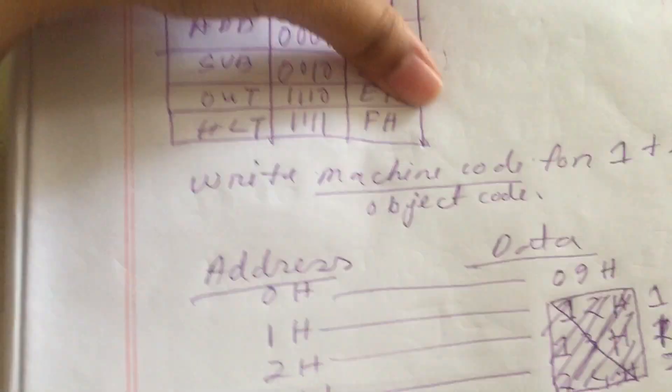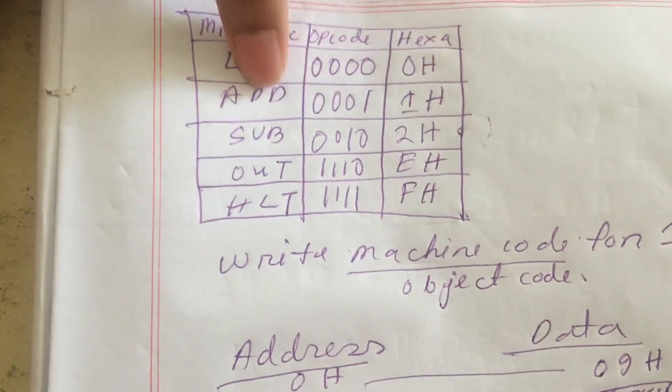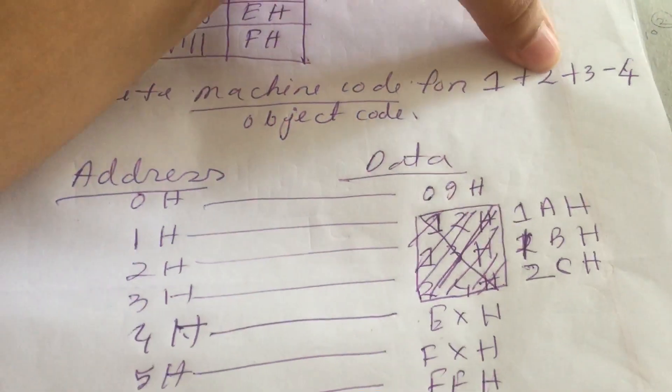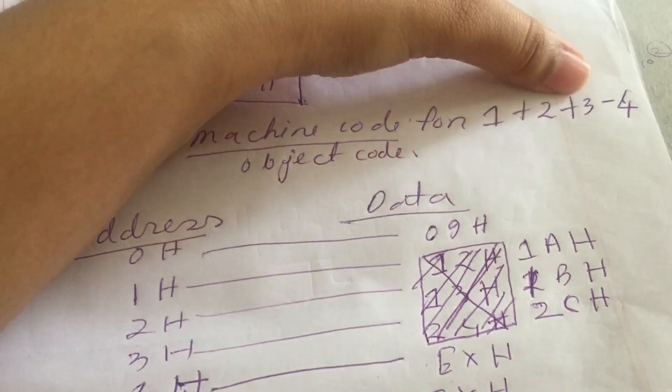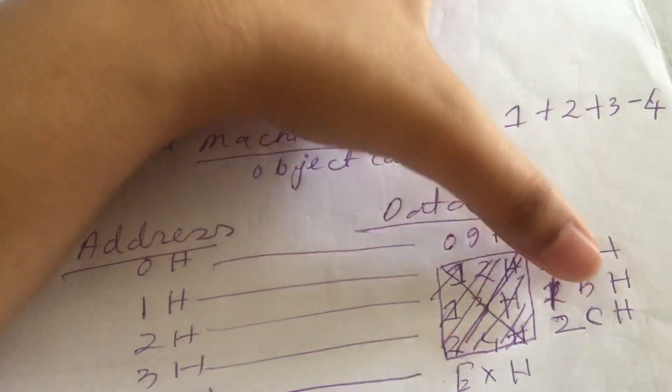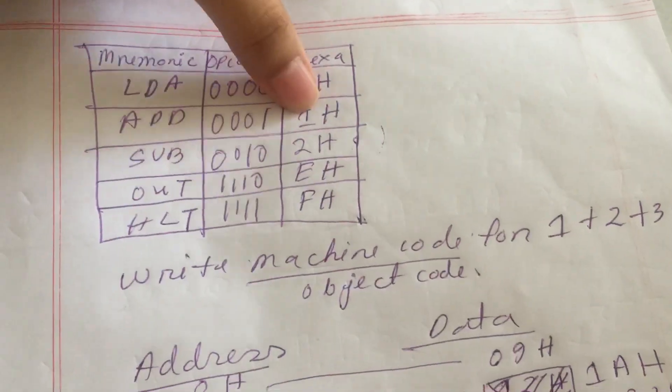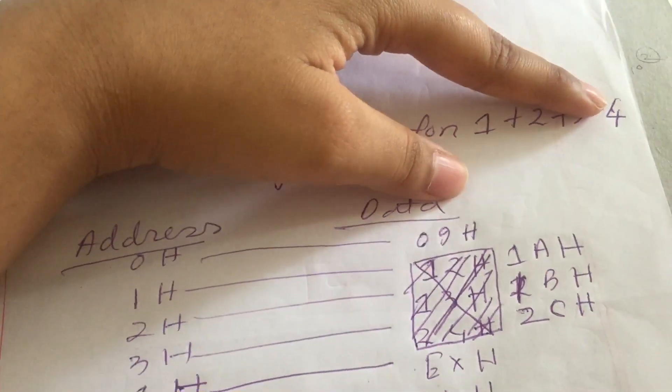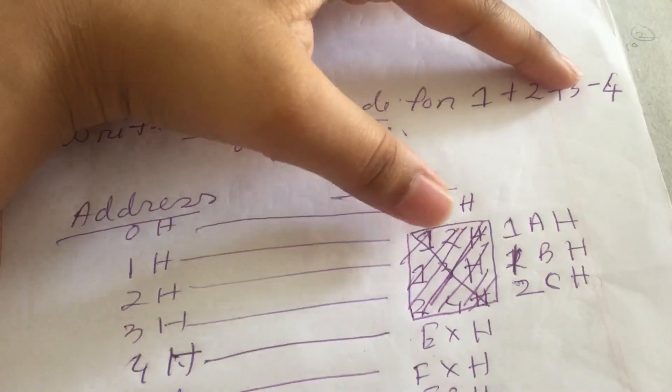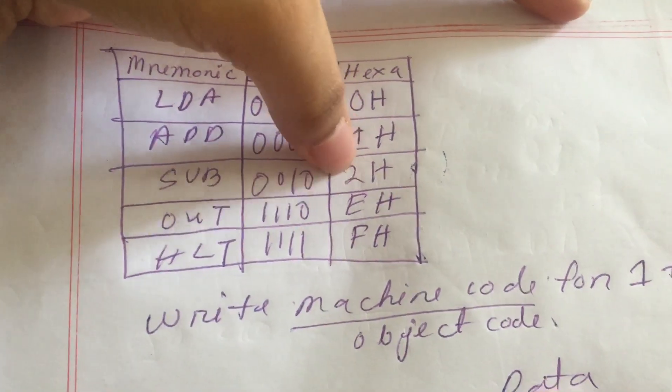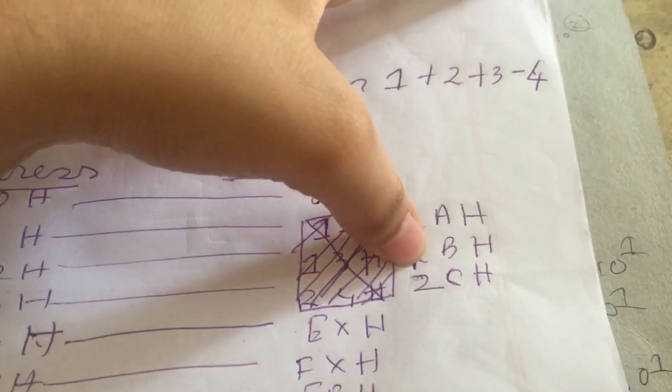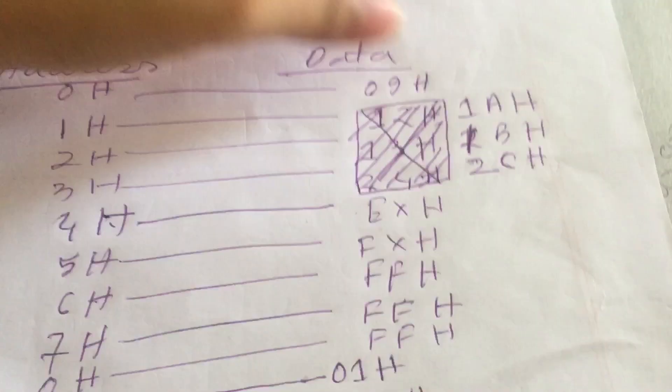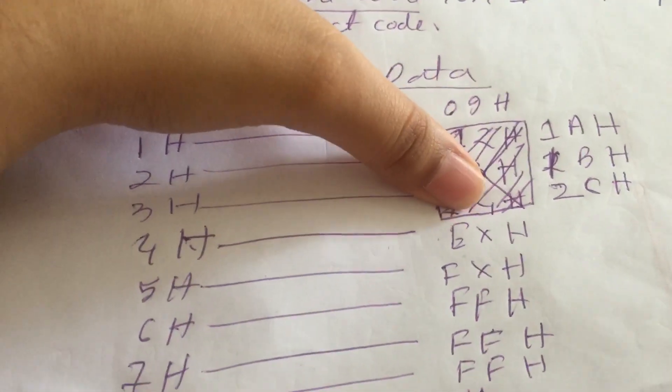So we will take AH, and 1 will come from here for add, so it's 1AH. And 2 and 3 was loaded in BH, so 1 comes from add here, so it's 1BH. And for subtraction, 4 was loaded in CH, so for subtraction here, hexer 2.